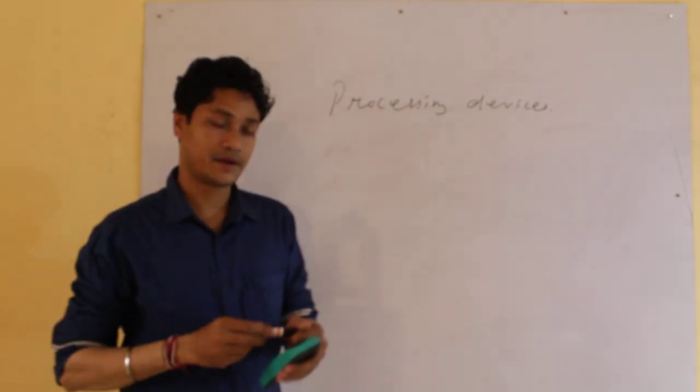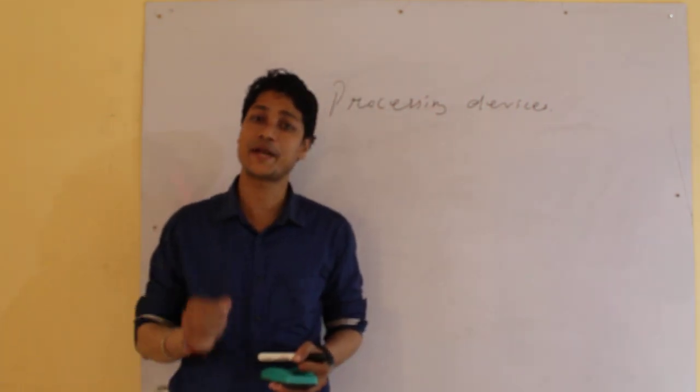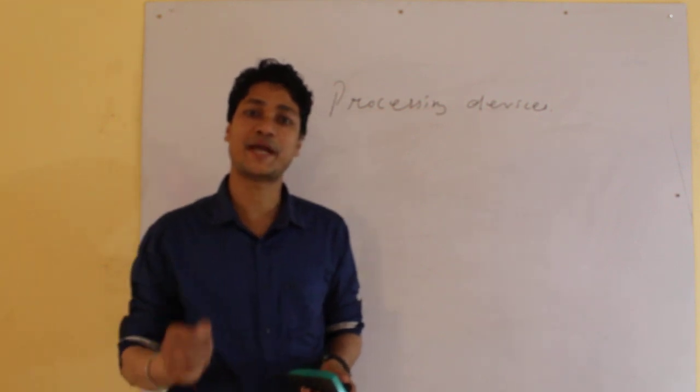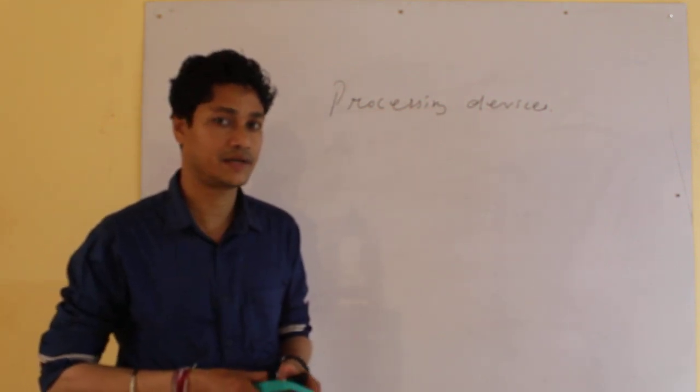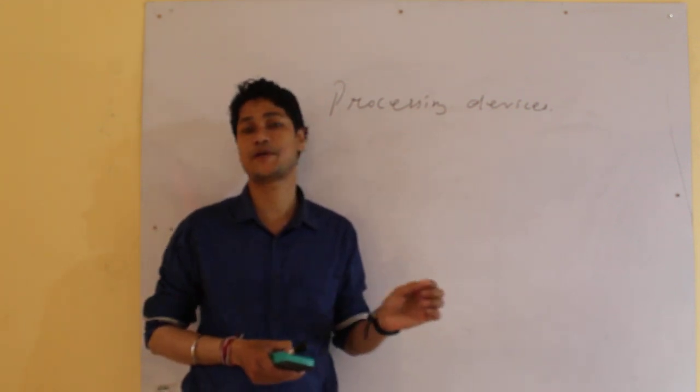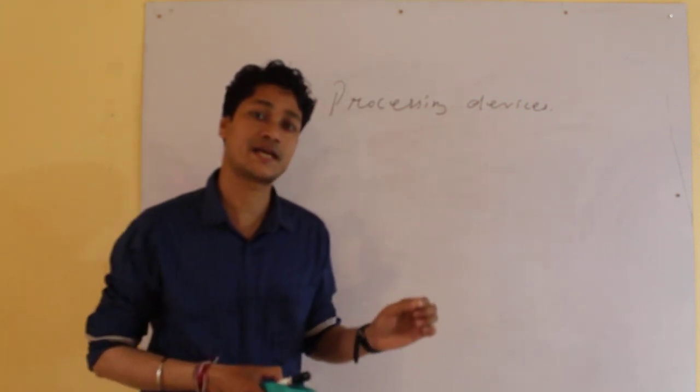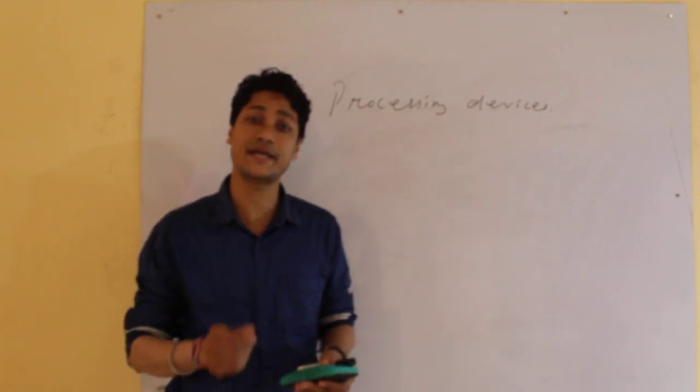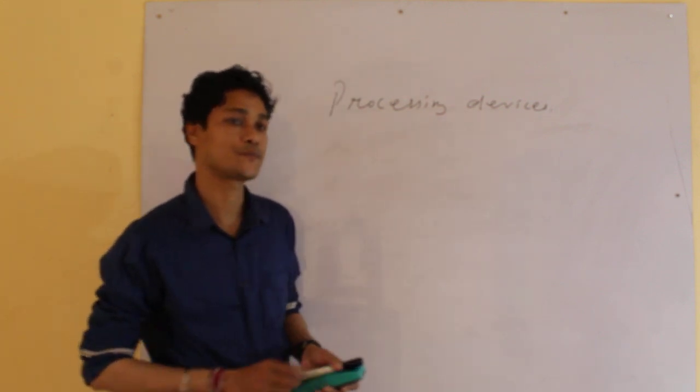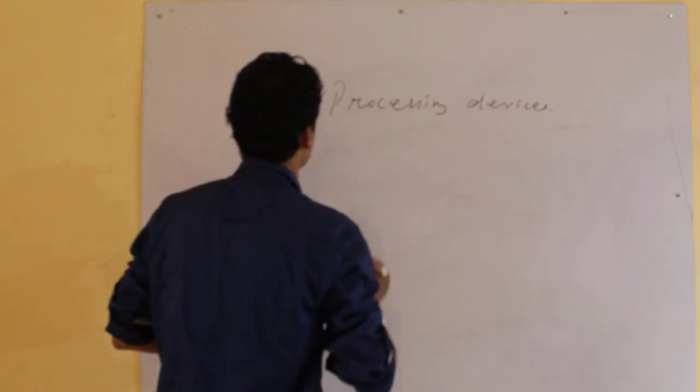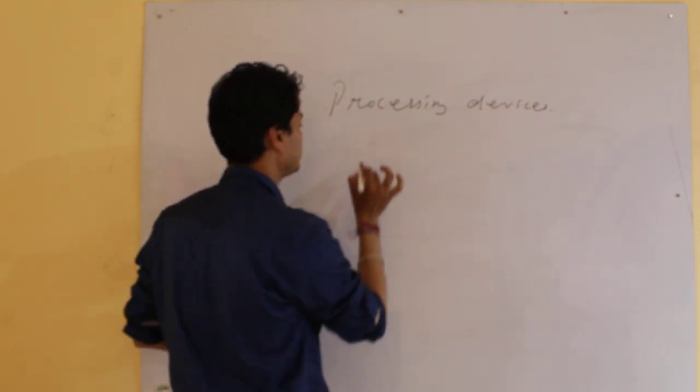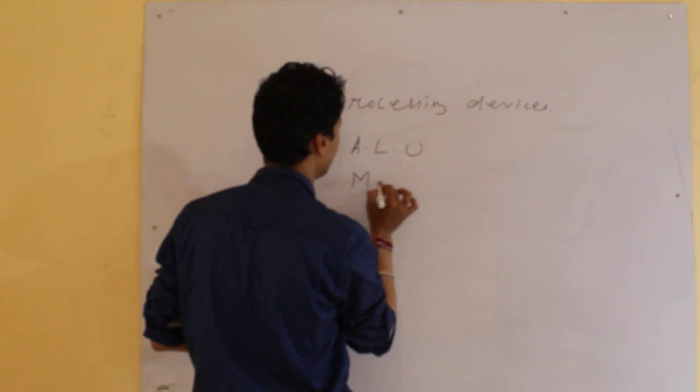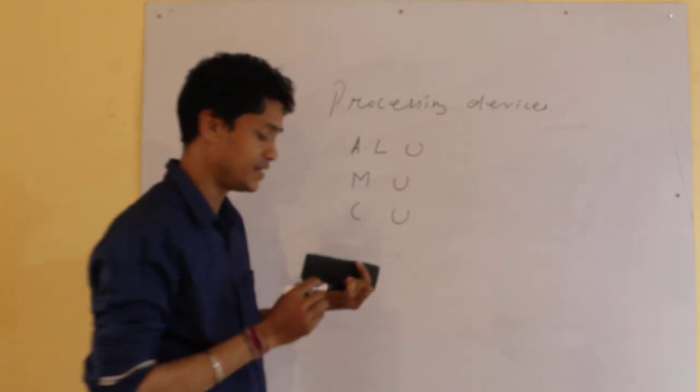Children, you already know the brain of a computer from standard one class. Do you know what is the brain of a computer system? It is the CPU. CPU stands for Central Processing Unit. And here today we will learn about the various parts of a CPU. The CPU is made of three different types: one is called ALU, the next one is called MU, and the last one is called CU.